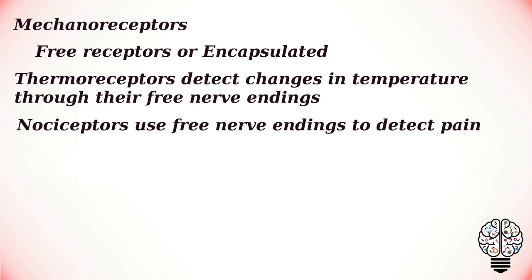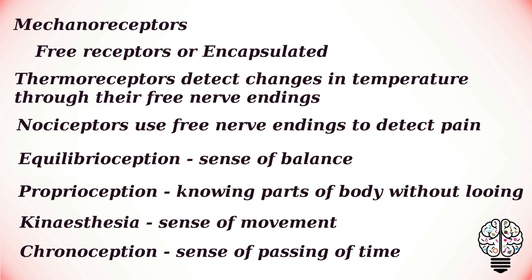In addition to the traditional big five senses, neuroscientists say that we are a bundle of senses. Many would argue that we have anywhere between 22 and 33 different senses. Equilibrioception is a sense of balance — this is what keeps us upright and helps us make our way around without getting hurt. Proprioception is knowing which parts of your body are where without looking, such as typing without looking at the keyboard or walking without watching our feet. Kinesthesia is the sense of movement, and chronoception is how we sense the passing of time.